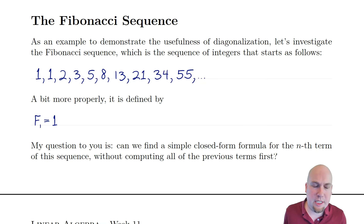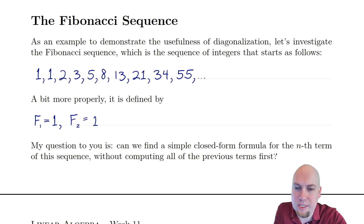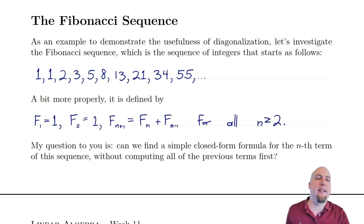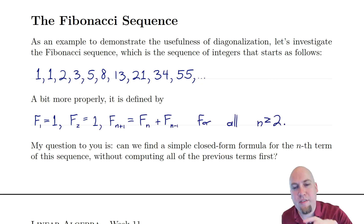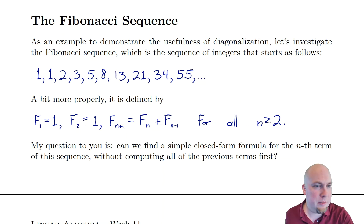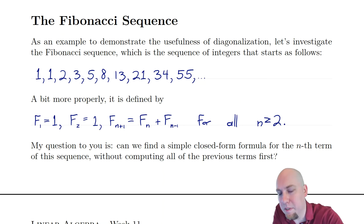A little bit more formally, let's give a notation for this. Let's say the first Fibonacci number, f sub 1, is 1. And then the second Fibonacci number, f sub 2, is 1. And then after that, the (n+1)th Fibonacci number is just the sum of the nth and the (n−1)th Fibonacci number. So that's how you get all the Fibonacci numbers after the second — as the sum of the previous two.